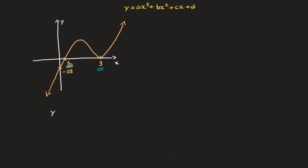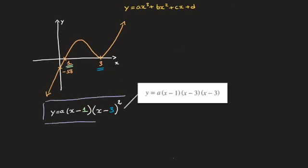We write y equals a times x minus 1, so I'll just write that there, that's x minus 1, close the parentheses, times x minus 3, which I write here, that's 3. But this time, because at x equals 3, the curve only touches the x-axis, we raise that x minus 3 to the power of 2. And I'll go ahead and box that intermediate result.